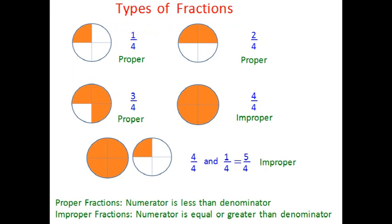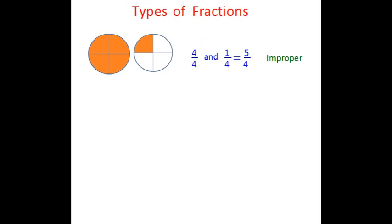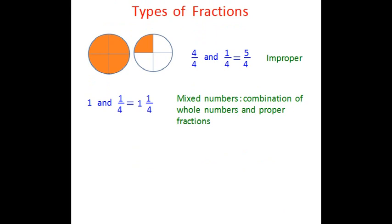Now let's look at where we have taken one whole pizza and a quarter of a second pizza. We know this is called an improper fraction, but can we also write it as one and a quarter? Rather than writing one as four over four, we can just write it as the whole number 1. So if we write it as one and one over four, it is called a mixed number. Mixed numbers are a combination of whole numbers and proper fractions — the same quantity can be written as either an improper fraction or a mixed number.